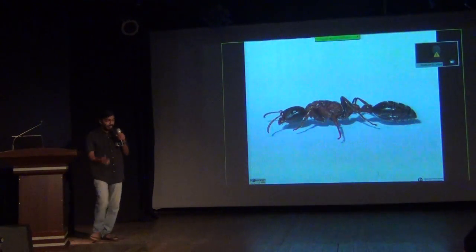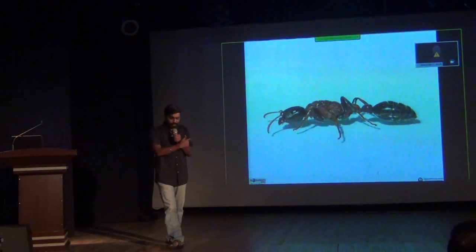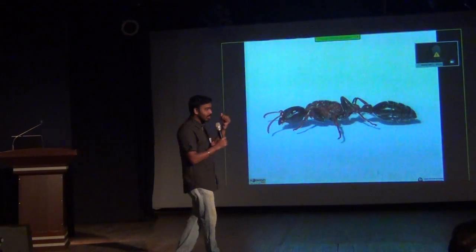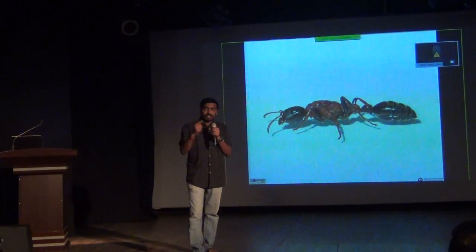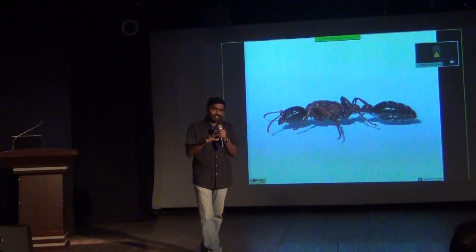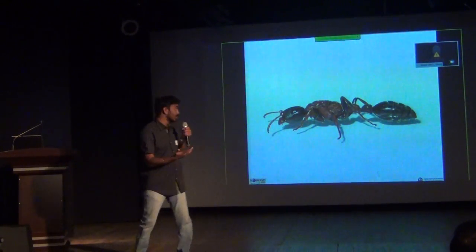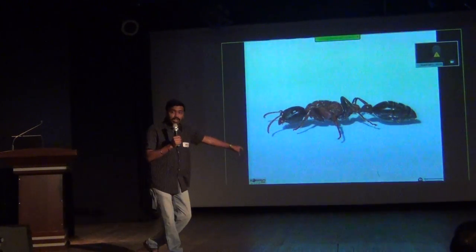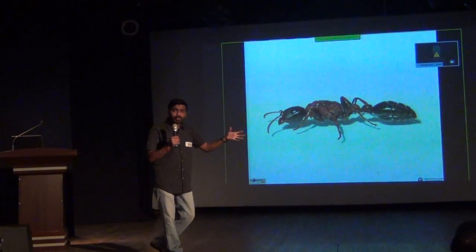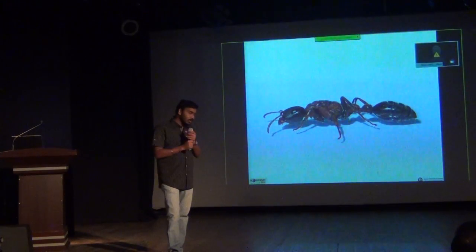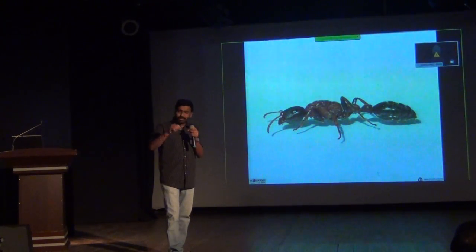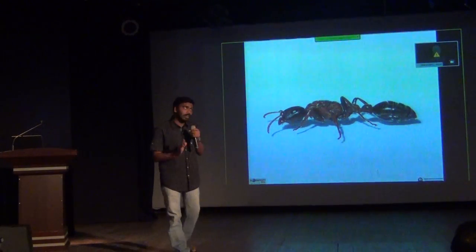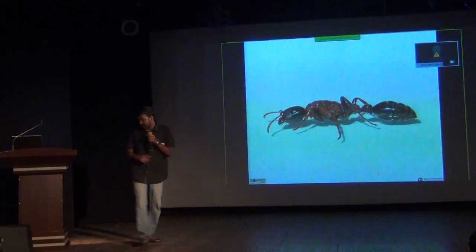Then another nasty one from the ant world — Tetraponera rufonigra, the arboreal bicolored ant. Again, if you've been stealing mangoes from the neighbour's tree you would have been stung by her. This ant has a very potent sting considered to be one of the most painful stings in the insect world. Once it stings you, wherever it has stung will swell up and you will have a really tough time dealing with it.